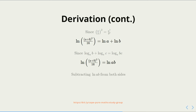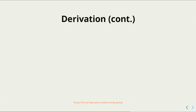We can subtract the natural log of ab from both sides to get that the natural log of (a plus b) squared on 16 minus the natural log of ab is equal to 0. There's a law of logarithms that tells us that the log of b to the base a minus the log of c to the base a is equal to the log of b divided by c to the base a.